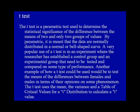A very popular use of a t-test is in an experiment where the researcher has established a control group and an experimental group that need to be tested and compared on some type of performance. Another example of how a t-test could be used would be to test the means of the differences between females and males in terms of their opinions on some phenomena. The t-test uses the mean, the variance, and a table of critical values for a t-distribution to calculate a t-value.